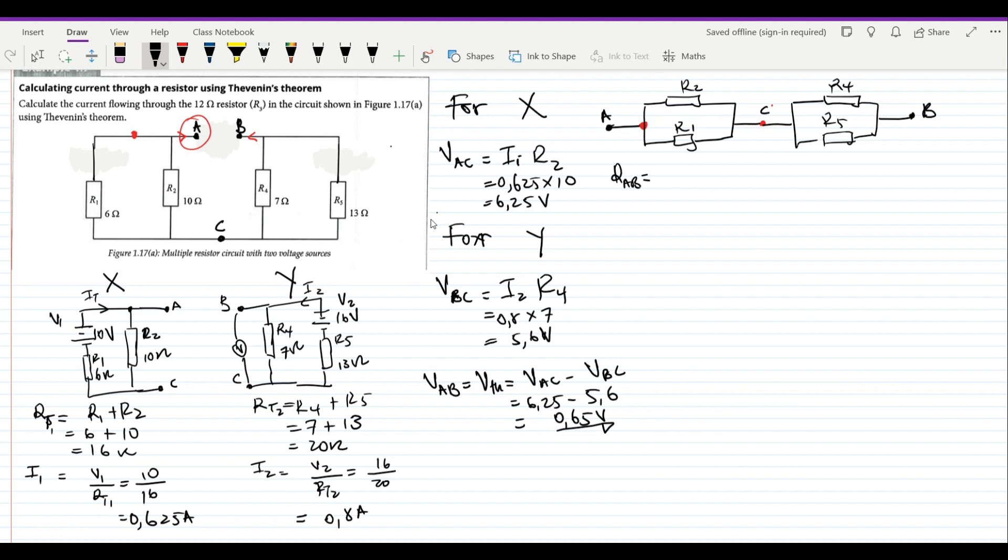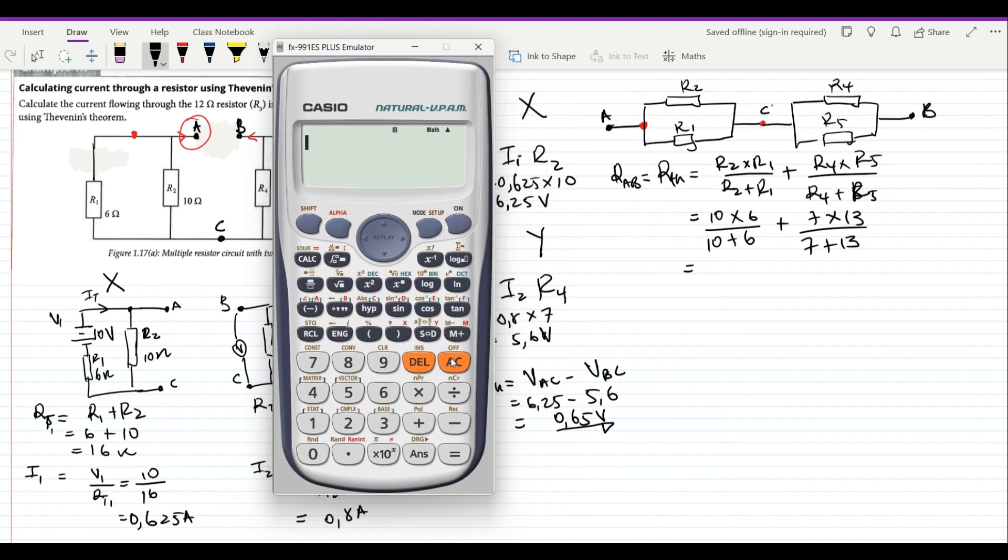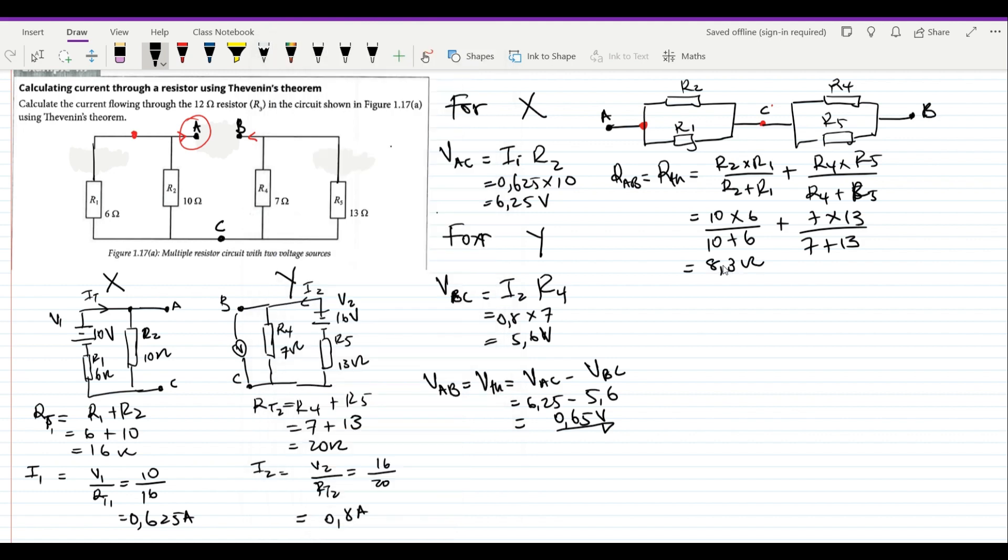So Rab will be equal to our Rth, which is R2 parallel R1 plus R4 parallel R5. Let us substitute in our values: 10 parallel 6 plus 7 parallel 13. Now let us get our Thevenin resistance here. Use your calculator—it's best to always have your scientific calculator handy. This will always assist you. Remember, always try to reset your calculator so that you know that the answers that you are getting come from a fresh-minded calculator. If you can look at the answer there, we have our Thevenin resistance as 8.3 ohms.